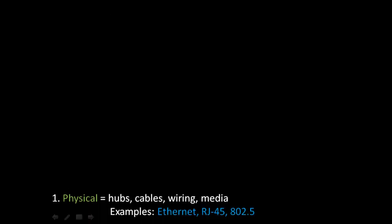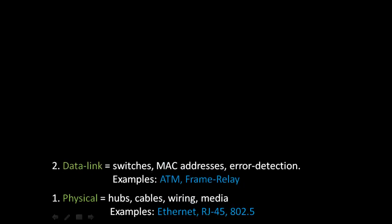Let's examine each of the OSI's seven layers. The first layer on the bottom is the physical layer — things like hubs, cables, wiring, and media. Examples are Ethernet, RJ45, and 802.5. On top of that is the data link layer, with things like switches, MAC addresses, and error detection though not correction. Examples would be ATM and frame relay.